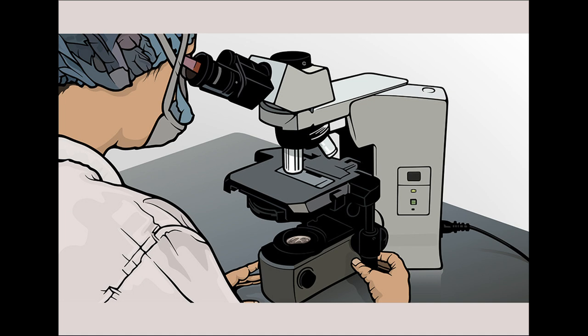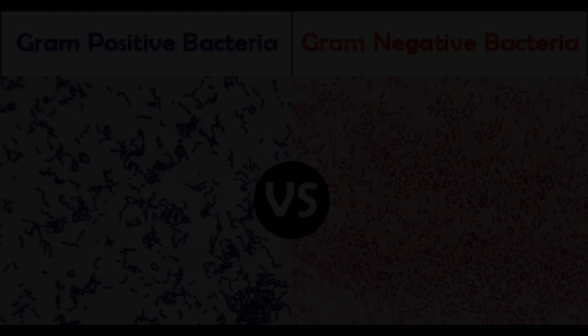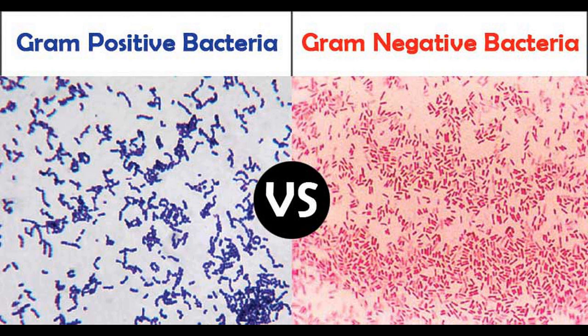After completing the staining process, we can observe the smear using a light microscope. Here you can see the microscopic view of gram positive and gram negative bacteria cultures — gram positive appears in purple color and gram negative appears in pink color.